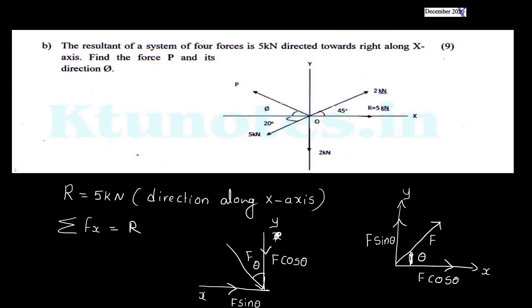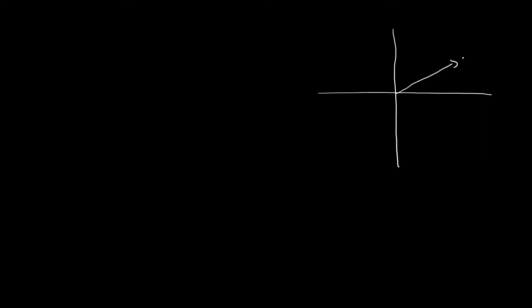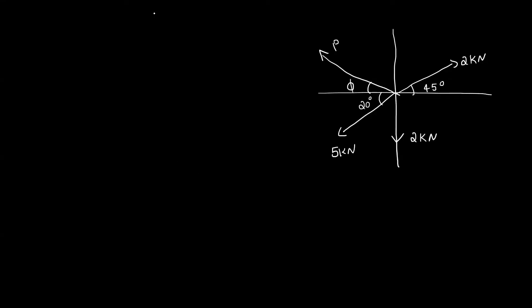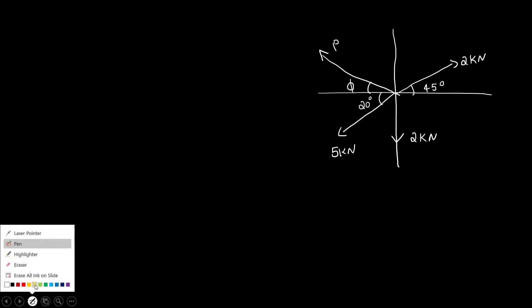You need to get the resultant of the other forces. If you have a figure, you have 2 kN at 45 degrees, this is 2 kN, this is 5 kN, and this angle is 20 degrees. If you have the result of P, this is the angle — that is 4 kN.